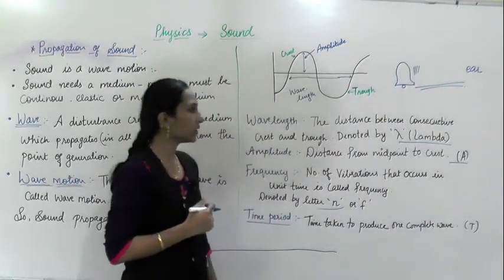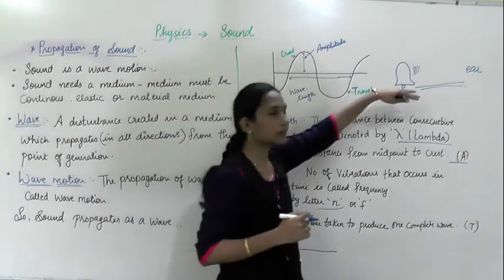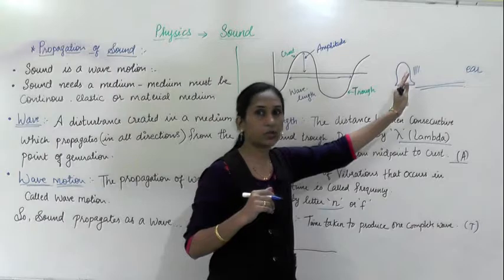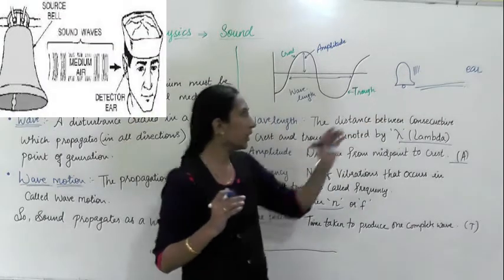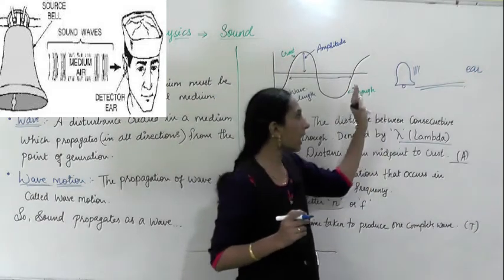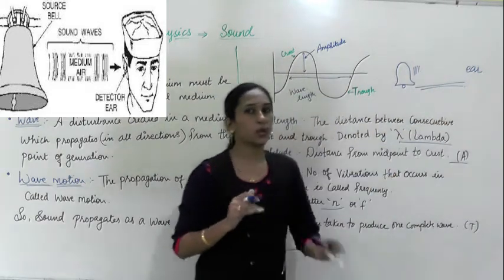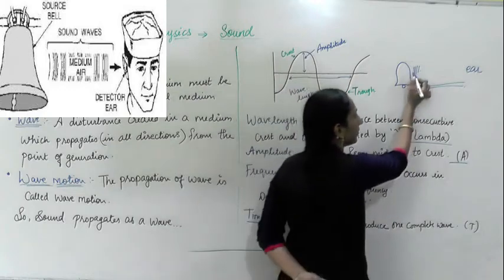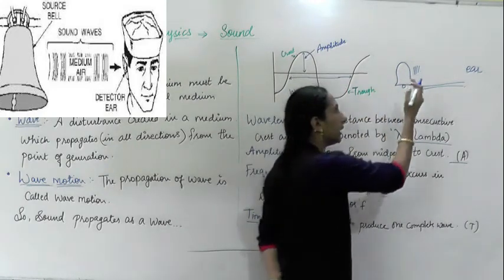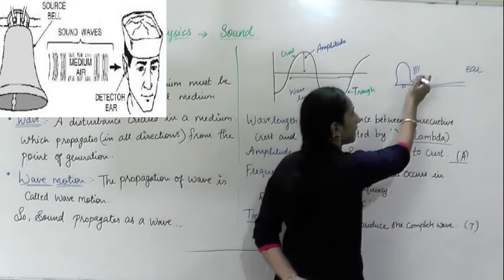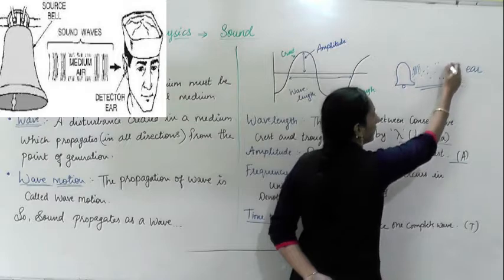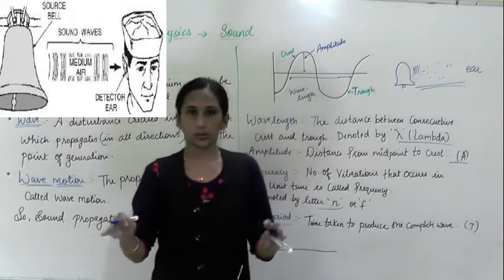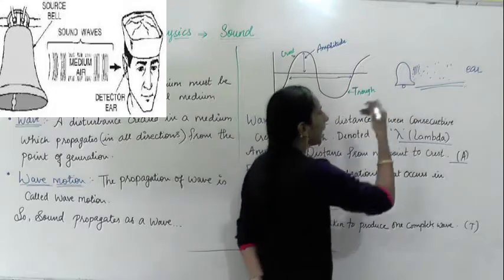When the bell is ringing, the gong hits the metal outer part. When it hits, a vibration is created — vibrations are produced. These vibrations are passed into the air medium. Air particles are present everywhere in our surrounding, so when the vibrations are produced in the bell, it passes the vibration to nearby air molecules.